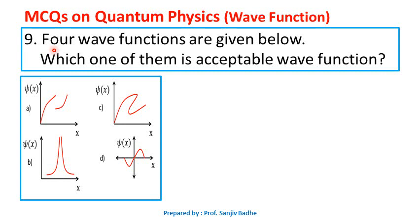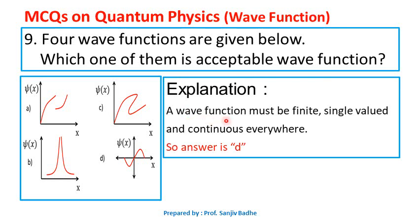Question number nine. Four wave functions are depicted in the form of graphs. Which one of them is an acceptable wave function? A wave function must be finite, single-valued, and continuous everywhere. Graph A is not continuous — there is a discontinuity. Graph B is also discontinuous. Graph C is not single-valued everywhere. Graph D is finite, single-valued, and continuous everywhere. So, the answer is D.